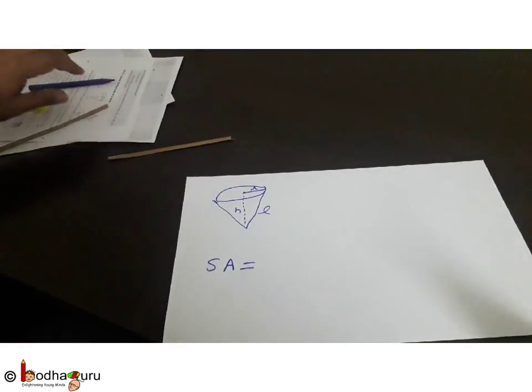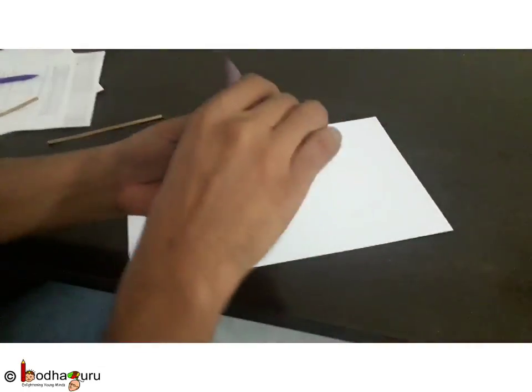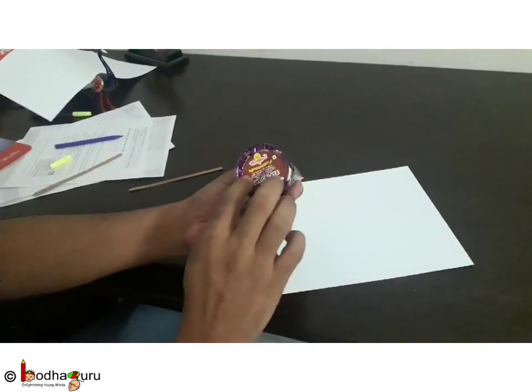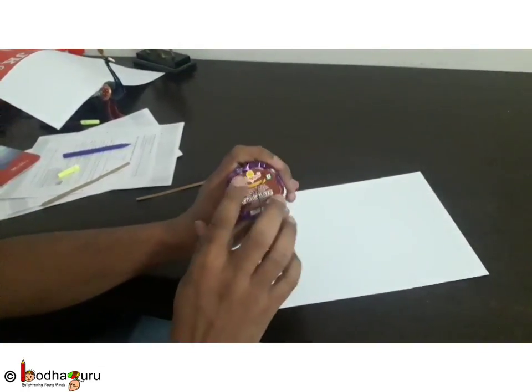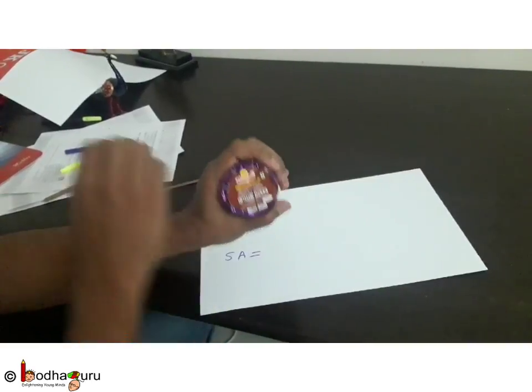First we will try to find the simpler part of it, which is this part of the cone. You can see it is a two-dimensional portion which is a circle.